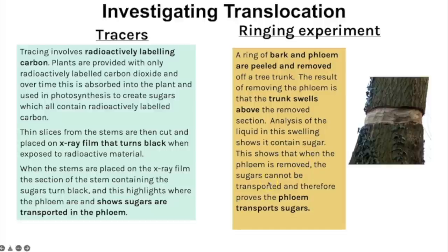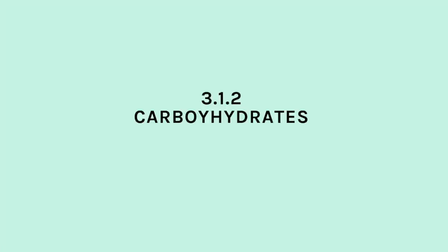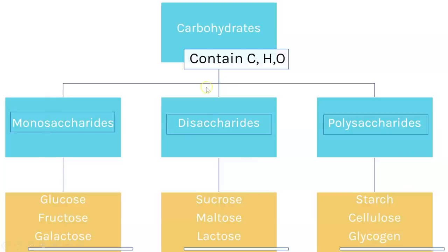Carbohydrates: three levels of size. Monosaccharides (one sugar unit): glucose, fructose and galactose. Disaccharides (two units joined): sucrose, maltose and lactose. Polysaccharides (many units joined): starch, cellulose and glycogen. Maltose = glucose + glucose; lactose = glucose + galactose; sucrose = glucose + fructose. All three disaccharides form via condensation reactions, producing water, with a glycosidic bond joining the monomers.